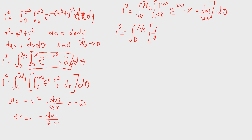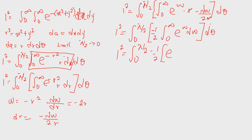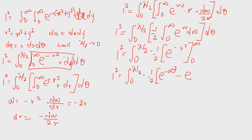Integrating and substituting the limits: the inner integral gives minus one half times e raised to the power of minus r squared evaluated from 0 to infinity. At r equals infinity, e raised to minus infinity squared gives 0; at r equals 0, we get minus 1. So the inner integral gives one half.